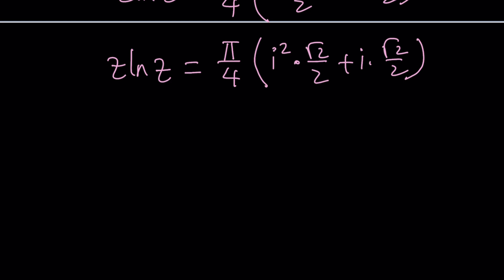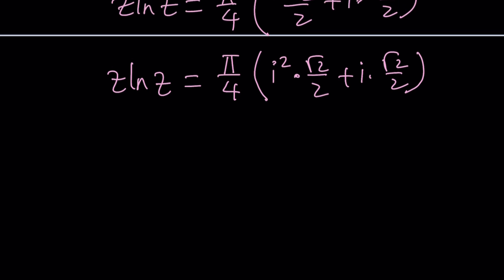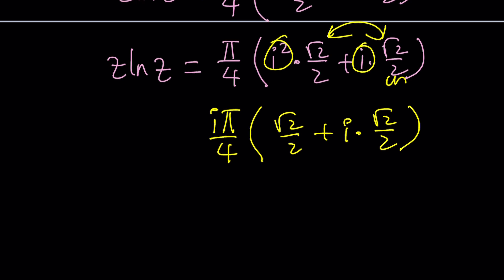But now we have i² and i so we can take out i and write this as i π/4 on the outside, which is nicer than having a π/4. And inside we're going to have root 2 over 2. Obviously these two are going to switch around because this will be now the real part after taking out the i, plus i times root 2 over 2. And this is super nice. You know why? Because this is cosine π/4 and this is sine π/4. Of course the angles need to be the same.